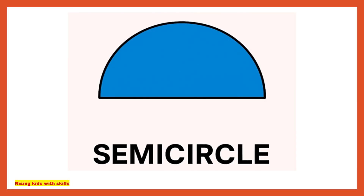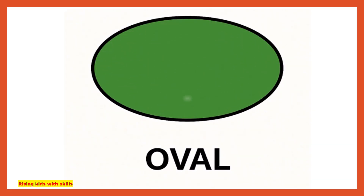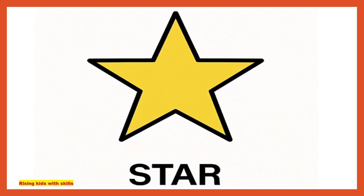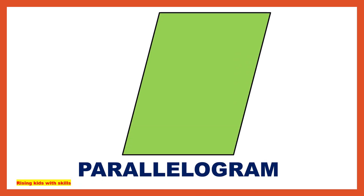This is called a semi-circle. It is half of a circle, shaped like a curved arch. This is an oval, a stretched-out circle like an egg shape. This is called a star.